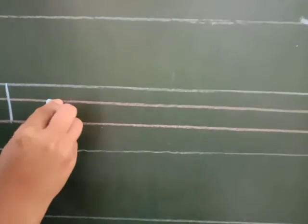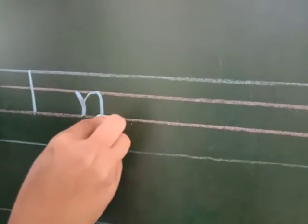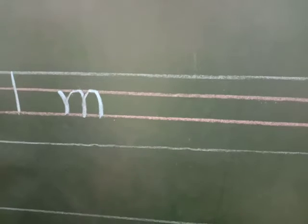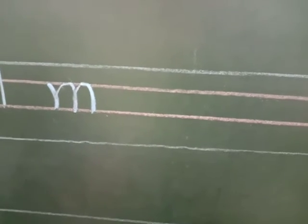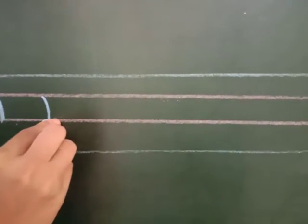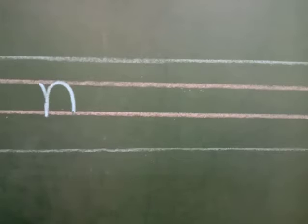Small m: curve line — see, half circle or a curve line. Again another curve line or a half circle. So it becomes letter m. Small n: curve line, curve line. Small n.